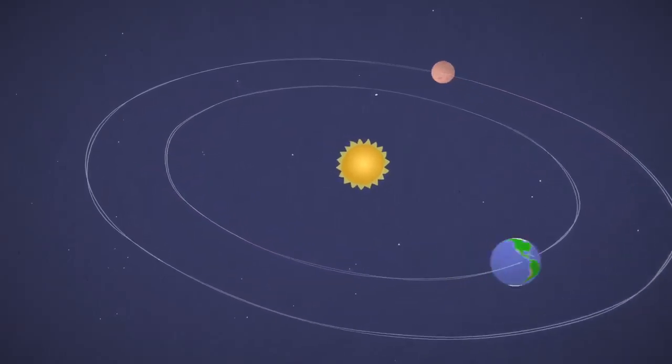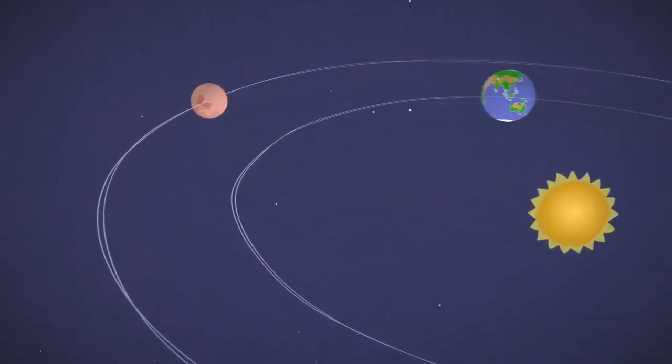About every two years, the two planets are in perfect positions to get to Mars with the least amount of rocket fuel. That's important. The total trip is over 300 million miles.